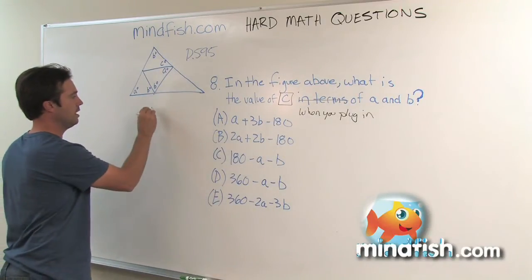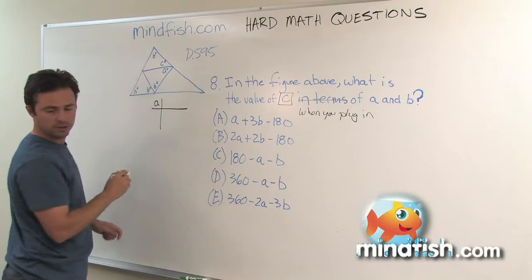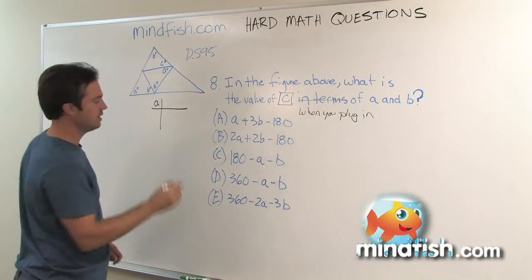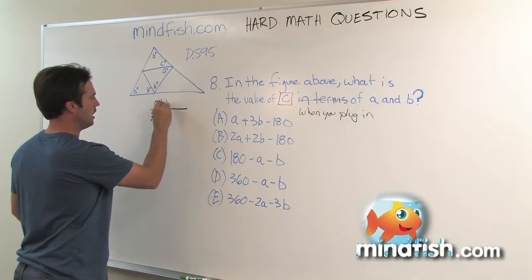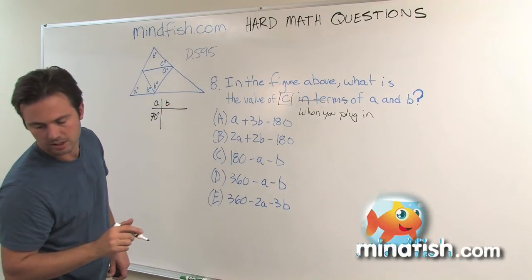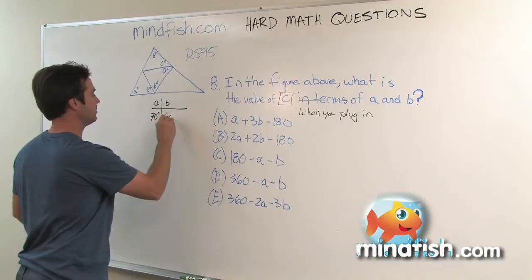We're going to plug in our A and B, and we're going to find that C. So what I'm going to do is I'm going to make A equal to, and looking at the picture, a decent approximation for A would be, let's say, 70 degrees, and B is looking like about 60 degrees.